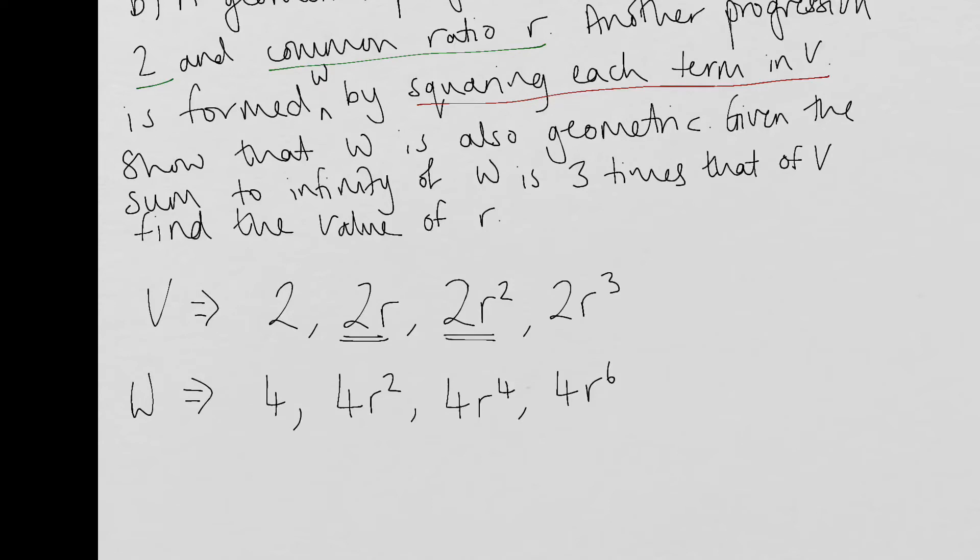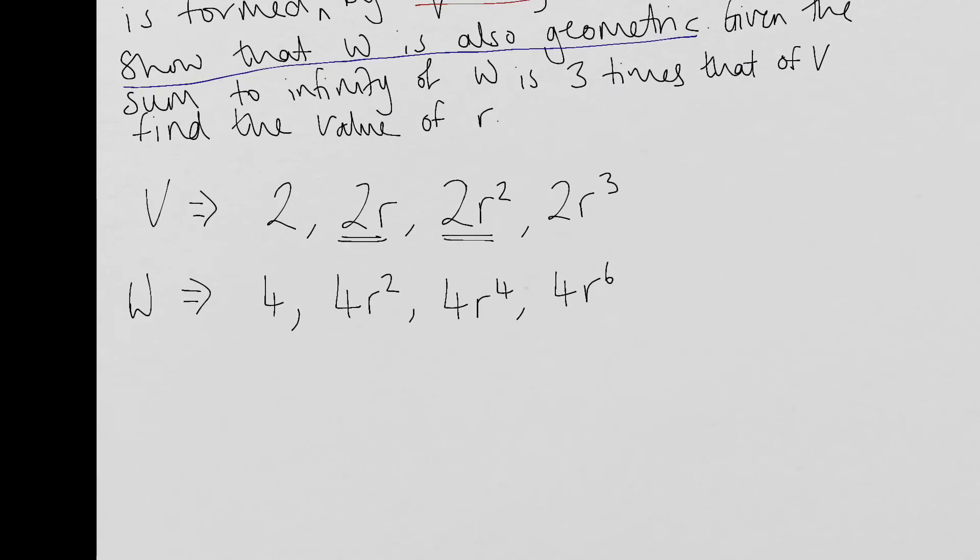So let's have a look at my third sentence. Show that W is also geometric. So that's my actual sort of first command there in this question. So showing that it's geometric, that means that the common ratio should be the same between terms. So if I have a look at the common ratio for the first two terms, I'm going to get the common ratio by dividing the next term by the previous one. So that's going to be 4R squared divided by four. So I get a common ratio of R squared.